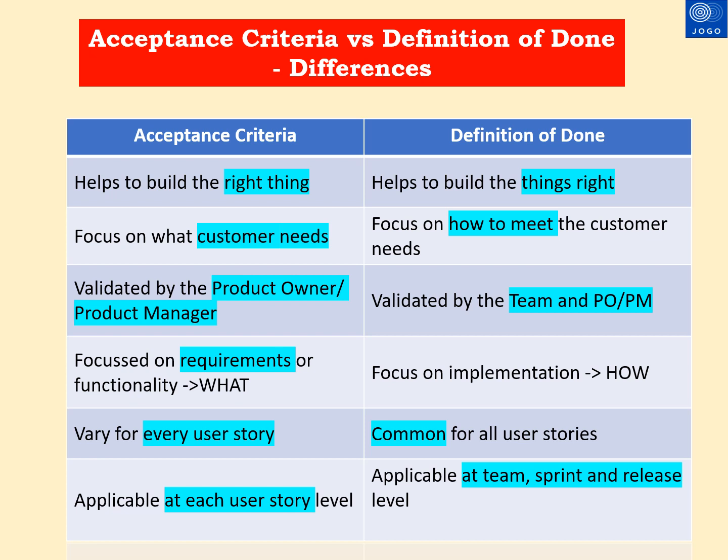Another important topic covered in this video is the differences between acceptance criteria and definition of done. You can see the key differences in the table — both are not the same. Acceptance criteria focuses on building the right thing; definition of done focuses on building things right, which is part of implementation. Acceptance criteria focuses on customer needs, while definition of done focuses on how to meet those customer needs and how to implement them.